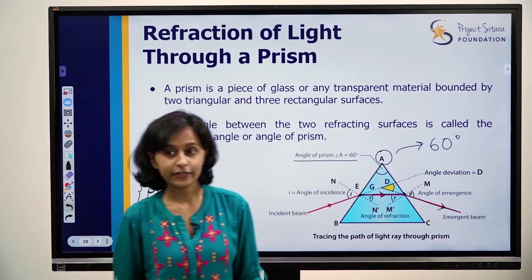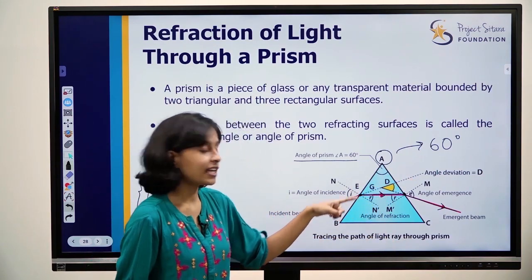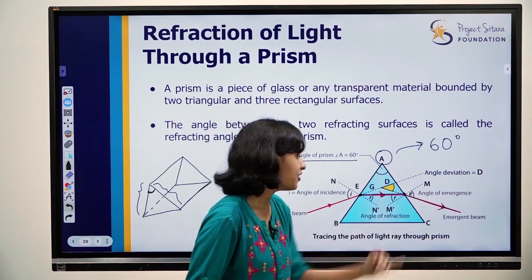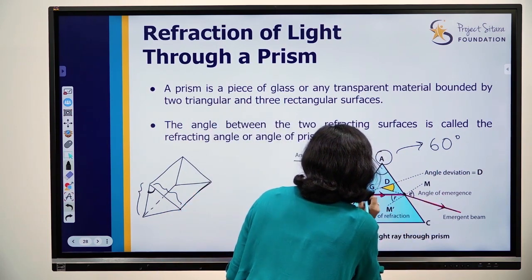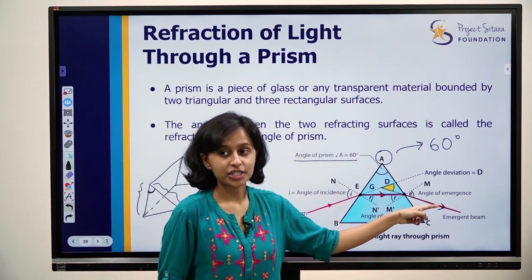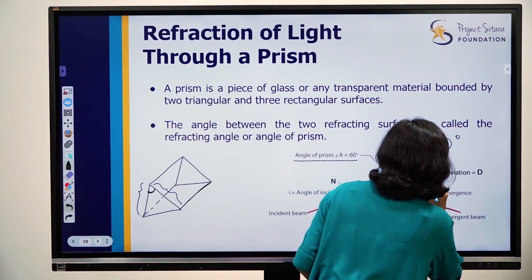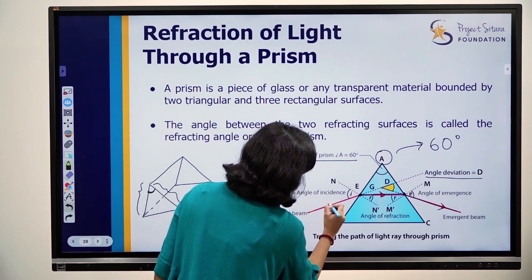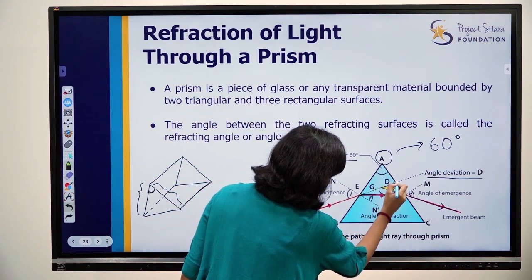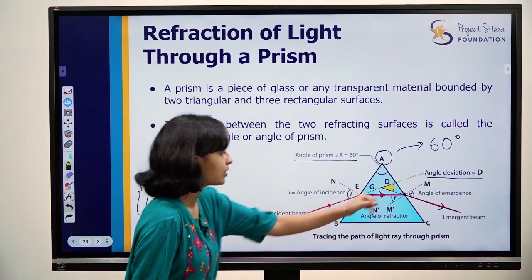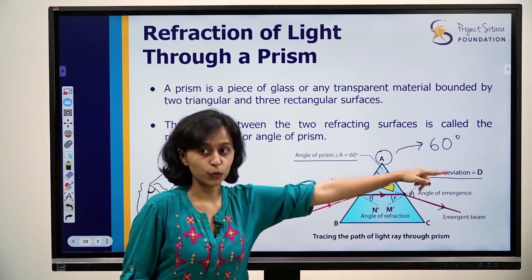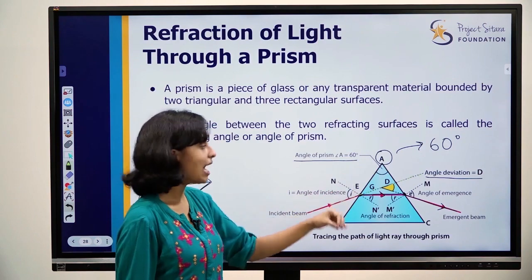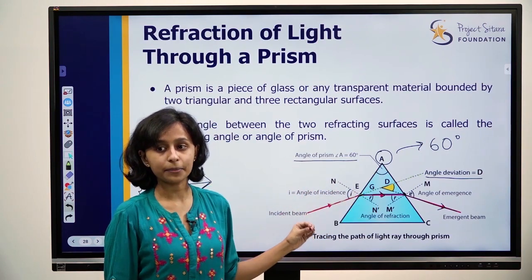This ray or beam is called the emergent beam. The angle between the emergent beam and the normal at that point is called the angle of emergence. In the figure, the angle of incidence is i and angle of emergence is e. The incident beam, if it had continued straight without refraction, and the emergent ray — the angle between these two is called the angle of deviation. It tells us how much the emergent beam has deviated from the incident beam.